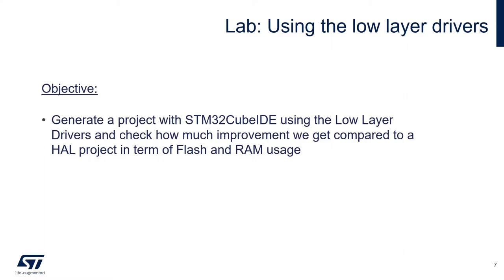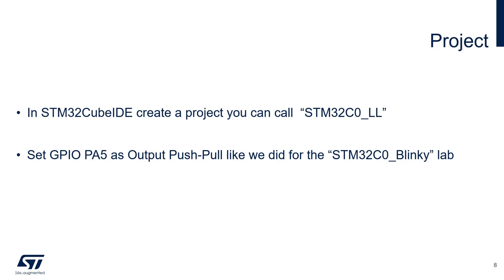Let's get started with the lab. The objective of this lab is to generate an STM32CubeIDE project using the low-layer drivers instead of HAL, and then look at the improvements comparing to a HAL project in terms of flash and RAM usage. We're going to create a new project, use LL instead of HAL, and like we did in the first lab — the Blinky — we're going to toggle GPIO PA5 and compare code size and RAM usage to see the improvements.